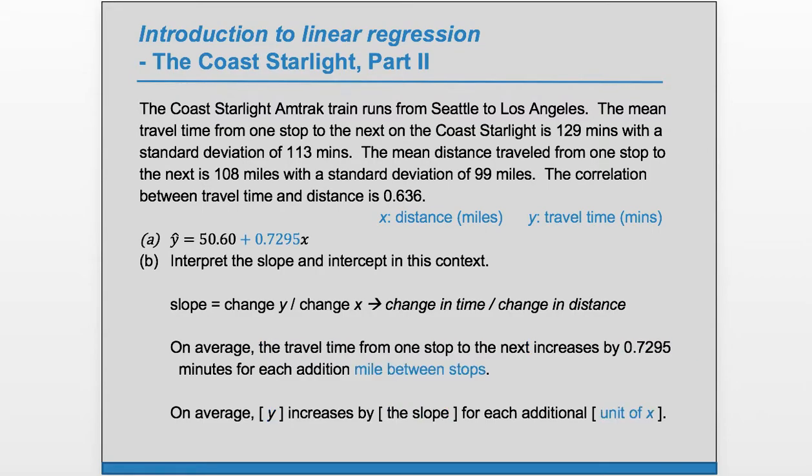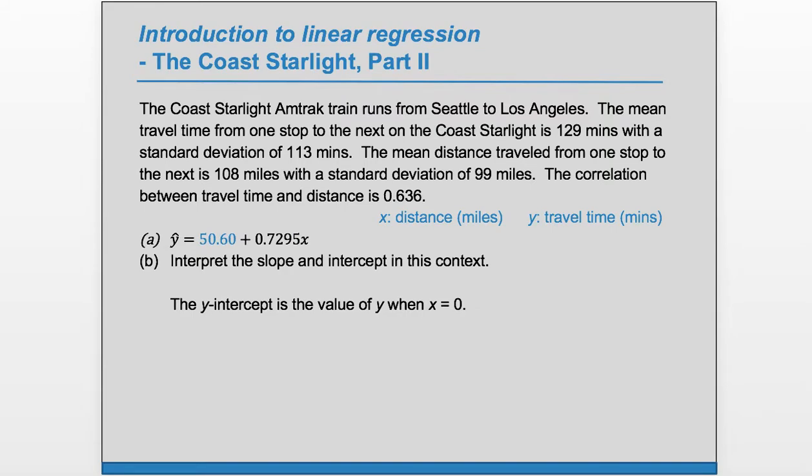And so now we can move on to the y-intercept. We know the y-intercept is the value of y when x is zero. So we're not saying that this is the value of y when x is zero; we're saying that this is what our model tells us it would predict.